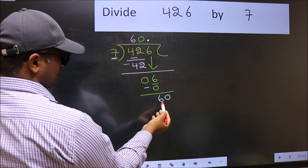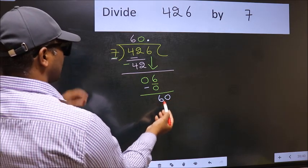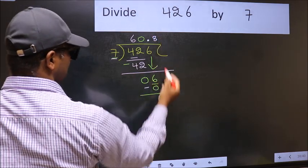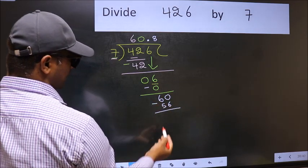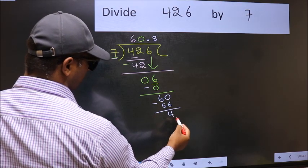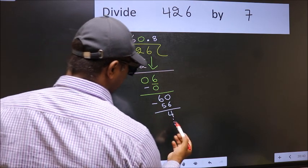So 60. A number close to 60 in 7 table is 7 times 8, 56. Now you should subtract. 60 minus 56, 4. And continue the division.